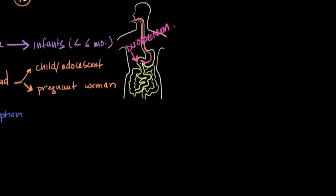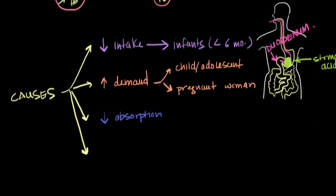Before iron is absorbed in the duodenum, it has to pass through the stomach. And it's really important for the iron to encounter the stomach because the stomach contains lots of stomach acid. That stomach acid is essential for converting the iron you take in through your diet into a form that's more easily absorbed through the duodenum.